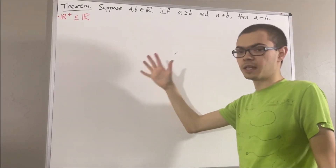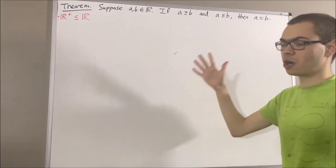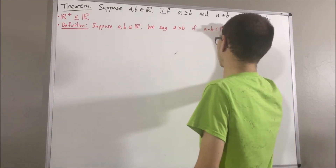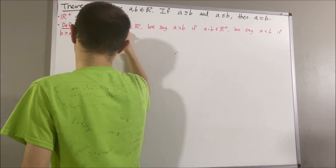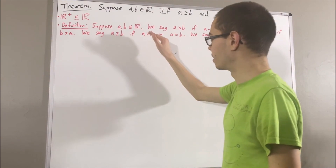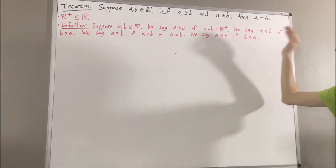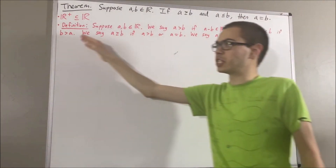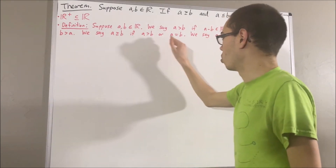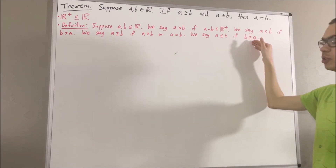Our definition of greater than, less than, greater than or equal to, and less than or equal to are as follows. Suppose a and b are real numbers. We say a is greater than b if a minus b is a positive real number. We say a is less than b if b is greater than a. We say a is greater than or equal to b if a is greater than b or a is equal to b. And we say a is less than or equal to b if b is greater than or equal to a.